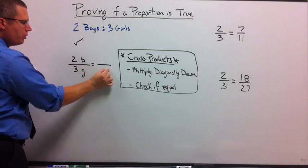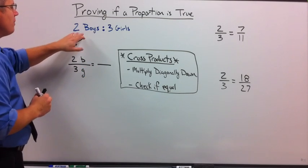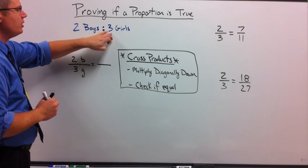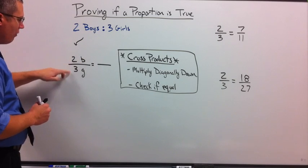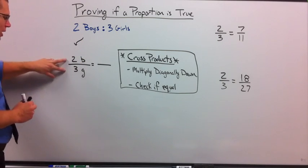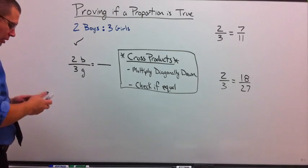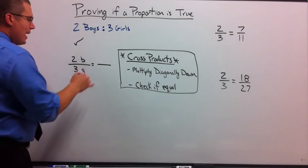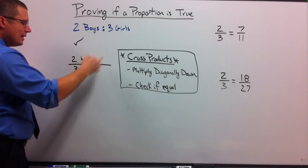Is this ratio equal to this ratio? So I took my ratio of 2B compared to 3G. Two B over three G. I could have flipped it if I wanted to. So what I want to do is make another ratio and see if it's equal.